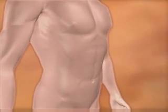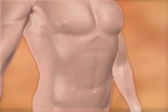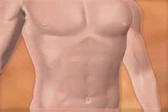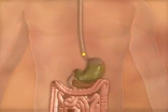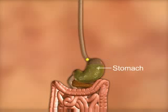Diabetes type 2 is the most common form of diabetes. Although it can occur at any age, it is more common in people who are overweight, sedentary, and over middle age.